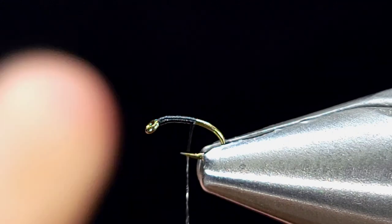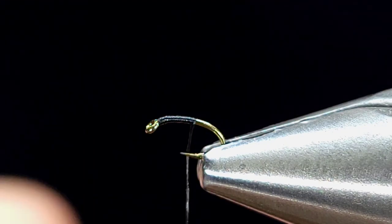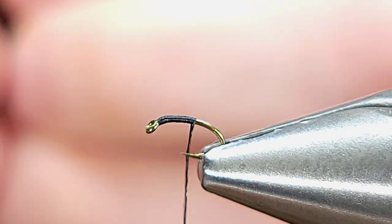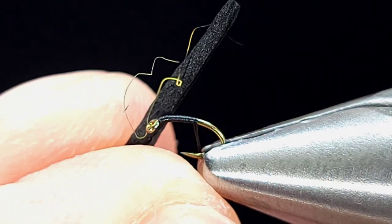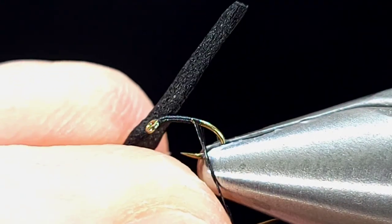For the body of this fly, I'm just using a scrap piece of black two millimeter foam. I'm going to roll it between my fingers a little bit just to make it even a little bit more slender.